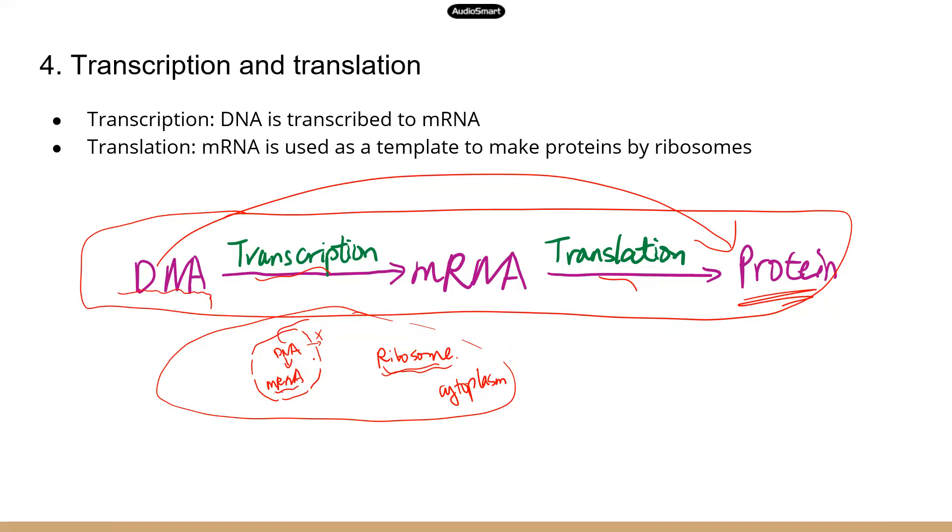mRNA has no trouble getting out of the nucleus. And just like the name, mRNA is like a messenger. It's going to deliver the genetic instruction to ribosomes to make proteins. So it has to be a two-step process.